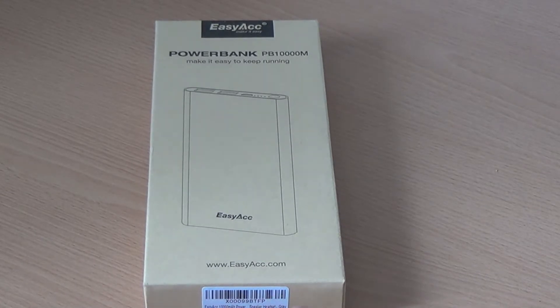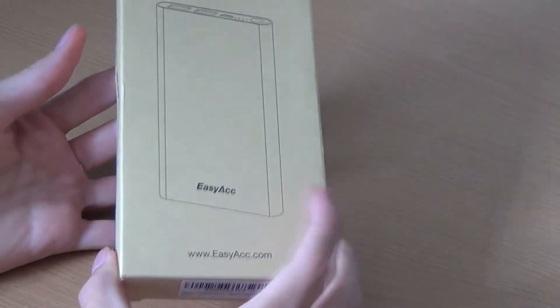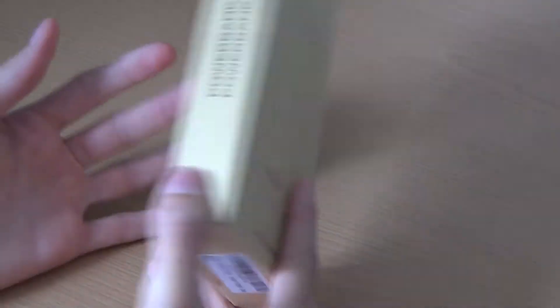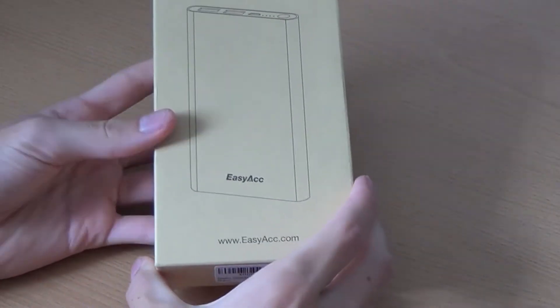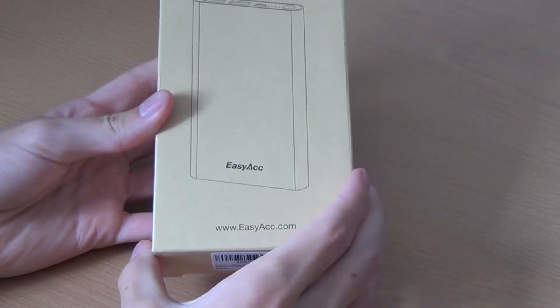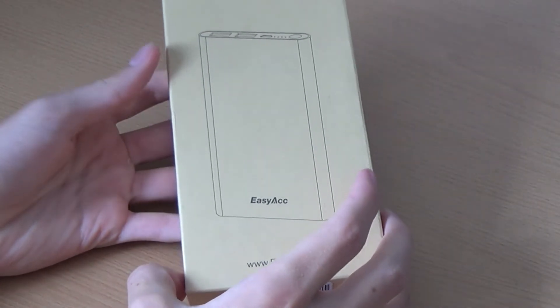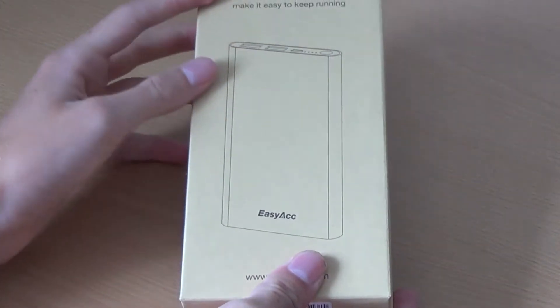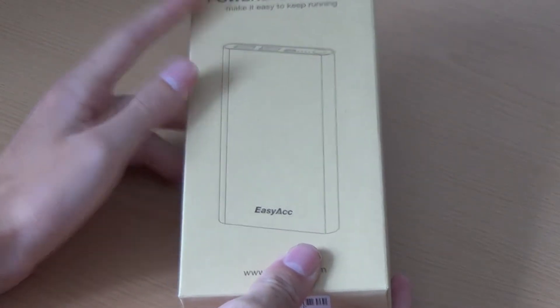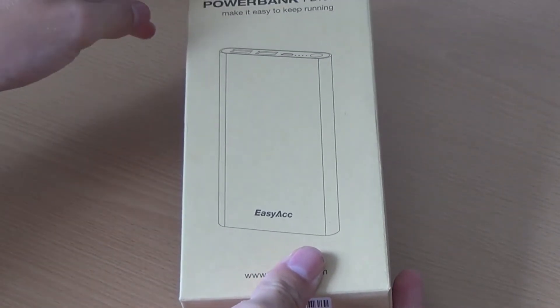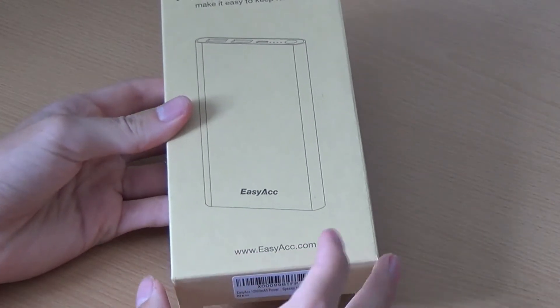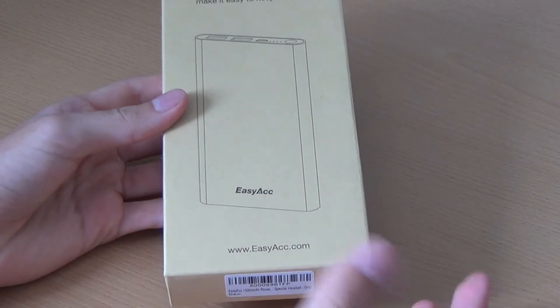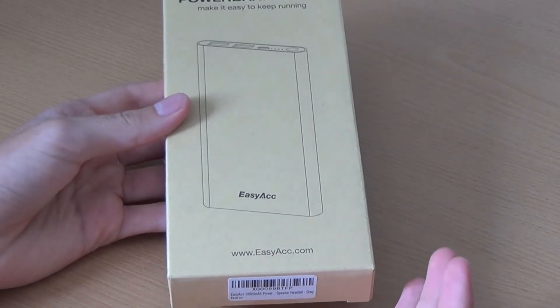First let's have a look around the box itself. You can see the box is quite plain, very basic, not much to it - just a cardboard box with a quick stencil drawing of the actual device on the front. At the top here you've got Power Bank PB10,000M, and then you've got their little slogan: make it easy to keep running. You've got their logo at the top and the website down at the bottom. It's not a very interesting front, but plain and simple sometimes is better.